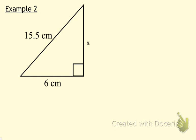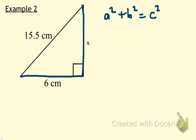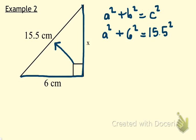Let's take a look at a second example. Please sketch the figure into your notes. By looking at the diagram, this time we are finding a leg. Remember, the legs are the two sides that come together to form the right angle. I'm going to start off by writing my formula: A squared plus B squared is equal to C squared. Since we're finding a leg, I'm going to leave A squared as A squared. The other leg is 6, and the hypotenuse — across from the right angle — is 15.5, so we'll put in 15.5 squared for C squared.